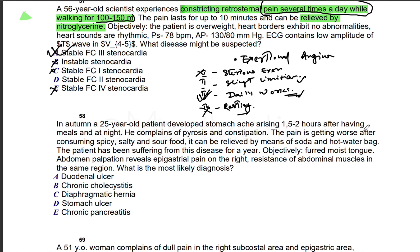In autumn, a 25-year-old patient develops stomach pain arising 1.5 to 2 hours after having a meal and at night. Complaints of pyrosis, constipation. Worse after consuming spicy, salty, sour food. Can be relieved by soda and hot water bag. Patient has been suffering from disease for a year. Epigastric pain on right with resistance of abdominal muscle. This type of question I've discussed before. This is a case of peptic ulcer disease—pain after eating food or at night.